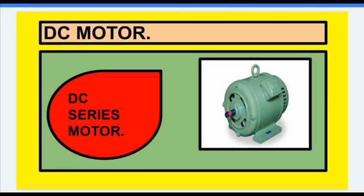This is the pictorial representation of a DC series motor. In this DC series motor, the armature winding is connected in series with the field winding, which is why its name is DC series motor.